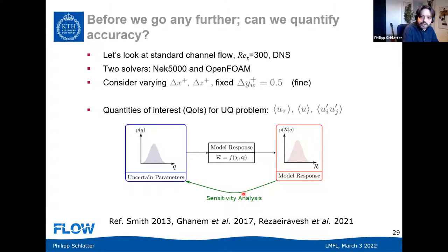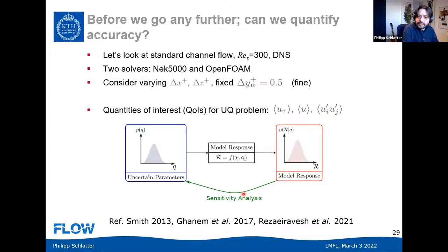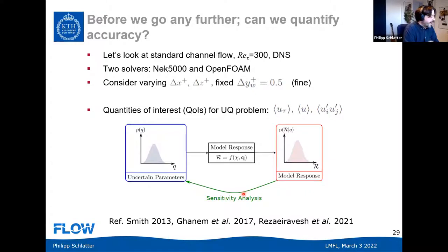We asked ourselves: can we quantify the claim about higher accuracy? We performed a sensitivity analysis comparing Nek5000 with OpenFOAM as an example of a lower-order code. We looked at this as a UQ problem, comparing predictions in channel flow — friction velocity u_tau, mean velocity profile, and turbulent kinetic energy.